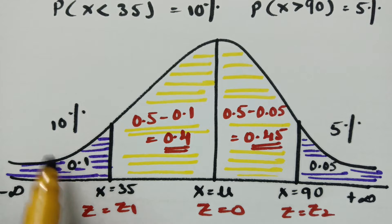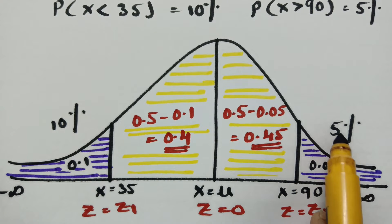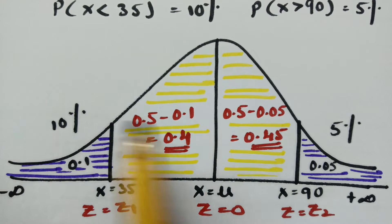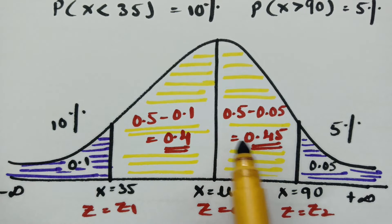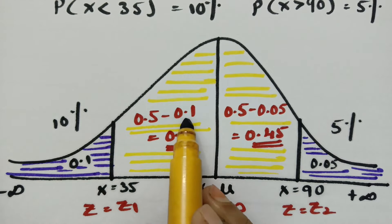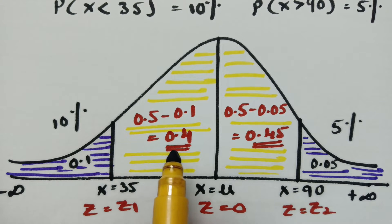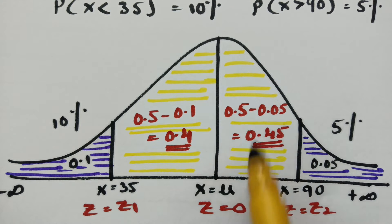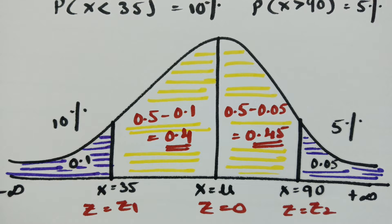X less than 35 is 10% and x greater than 90 is 5%. Half of the bell curve is 0.5 on each side. After subtracting 0.1 from 0.5, we get 0.4, and after subtracting 0.05 from 0.5, we get 0.45. This is a clear diagram. Next, we are going to calculate the mean and standard deviation values.